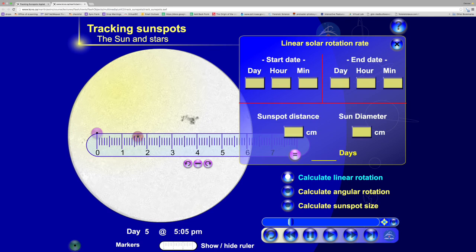Then you're going to put your start time and your end time - Day 5, 5:05 p.m. - and the distance that sunspot moved.